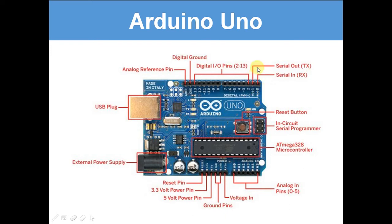TX means transmit — serial out. So pin 0 can receive stuff and pin 1 can transmit stuff. And then here you've got the digital pins, 2 to 13.